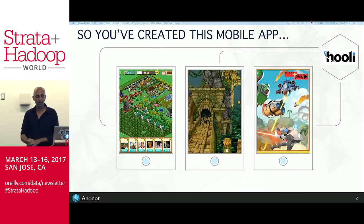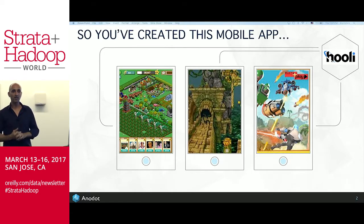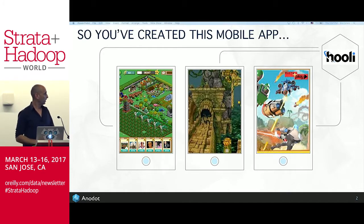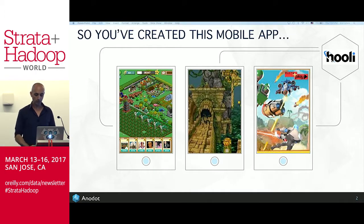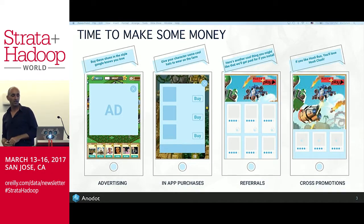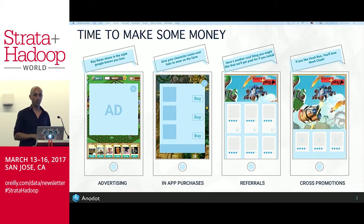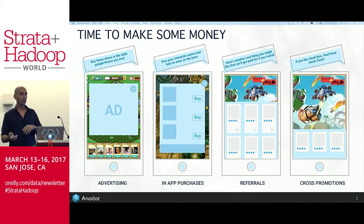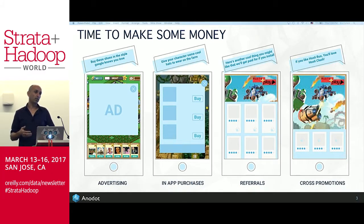Let's say you're a company called Hooli, and you have a bunch of art studios creating various games for you — things like Hooli Clash, Hooli Run, Hooli Whatever. You put them out in the market and you want users to use them. You're trying to make money. How do you make money out of mobile apps today? In-app advertising is very strong, as are in-app purchases, referrals, and cross promotions of different apps or games — all revenue-generating streams.